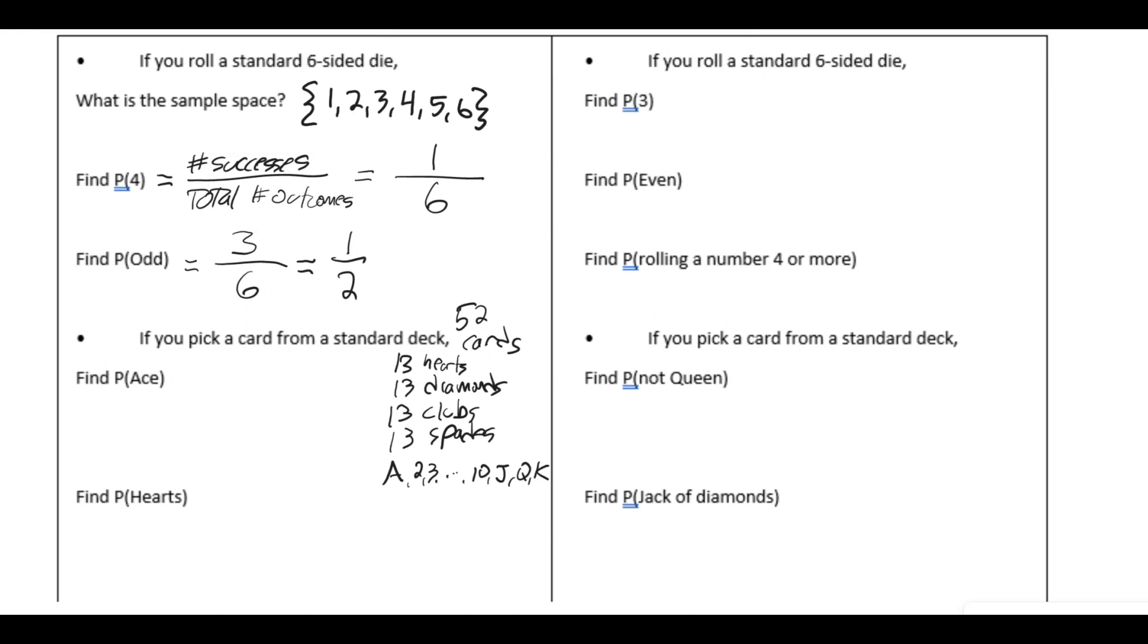So, find the probability of getting an ace if you pick a single card. We know the definition of probability, the number of successes over the total number of outcomes. In this case, there's a possibility of 52. And now, how many successes are there? So there's an ace of hearts. That's one. There's an ace of diamonds. That's two. An ace of clubs, and an ace of spades. So there's four possible solutions.